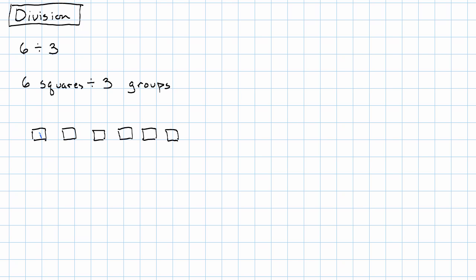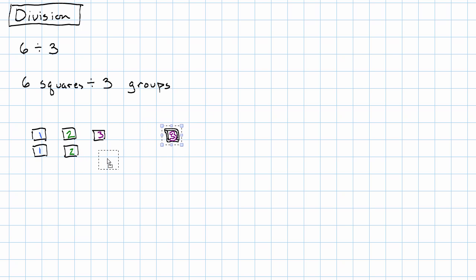This square will be in group 1. This square will be in group 2. This square will be in group 3. This square will be in group 1 again. This square will be in group 2. And this square will be in group 3. So how many squares in each group? Well, these two squares are both in group one, these two in group two, and these two in group three. So if I have six squares and I split them into three groups, I end up with two squares per group.